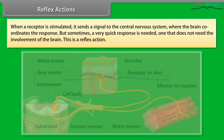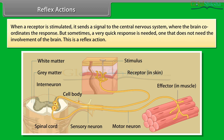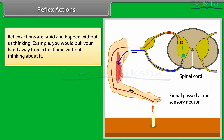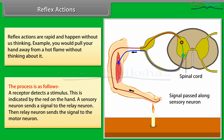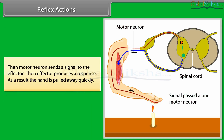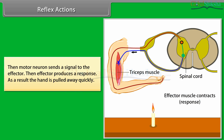When a receptor is stimulated, it sends a signal to the central nervous system where the brain coordinates the response. But sometimes a very quick response is needed that does not require involvement of the brain — this is a reflex action. Reflex actions are rapid and happen without thinking. For example, you pull your hand away from a hot flame without thinking. A receptor detects the stimulus, a sensory neuron sends a signal to the relay neuron, the relay neuron sends the signal to the motor neuron, the motor neuron sends a signal to the effector, and the effector produces a response — the hand is pulled away quickly.